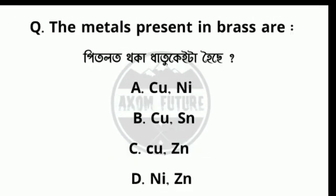Question: the metals present in brass are copper and zinc. Copper has atomic number 29, and zinc has atomic number 30.